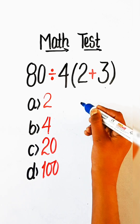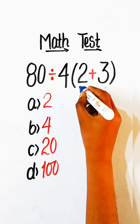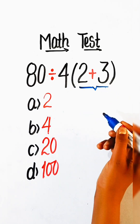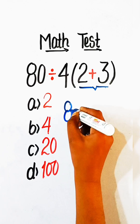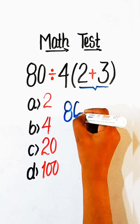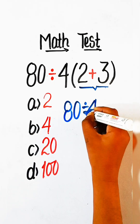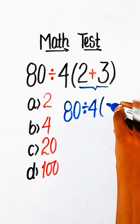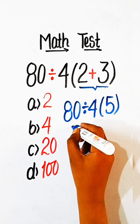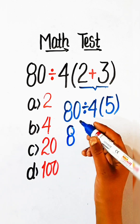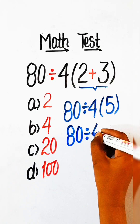So let's solve it together. First we have to solve the bracket part. 80 divided by 4, and 2 plus 3 is 5.